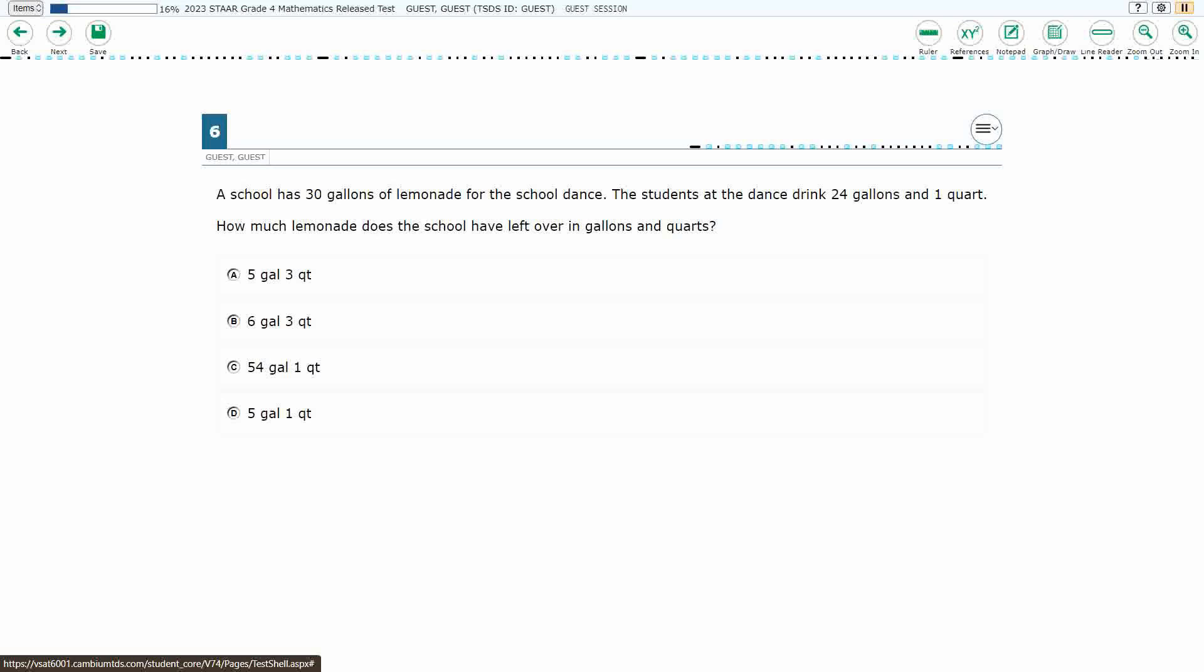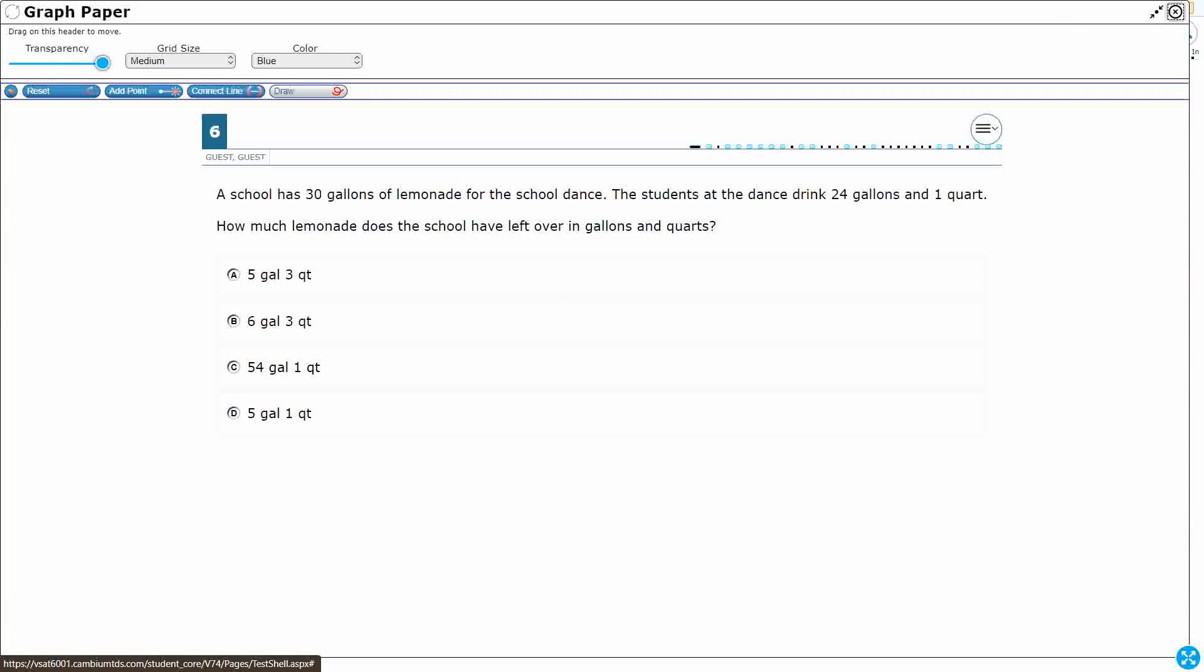All right, so we have a school, and they have 30 gallons of lemonade for the school dance. Let's go ahead and draw some lemonade here. So here's our school. We'll make that look like a school with a little school bell. And inside that school, you're going to find 30 gallons of lemonade.